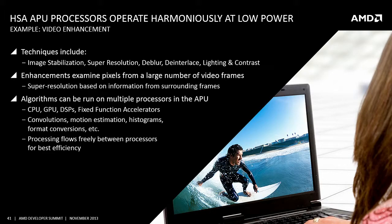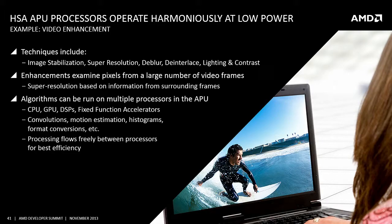HSA-enabled APU processors operate harmoniously at low power. A good example is video processing: image stabilization from shaky handheld recordings, super resolution, and image enhancement techniques all take data from multiple video frames and combine them to produce a better image. That's a lot of parallel processing. The algorithms can run on multiple processors in the APU — not just CPU and GPU, but DSPs and fixed-function accelerators — letting processing flow freely between processors and operate on data in place.